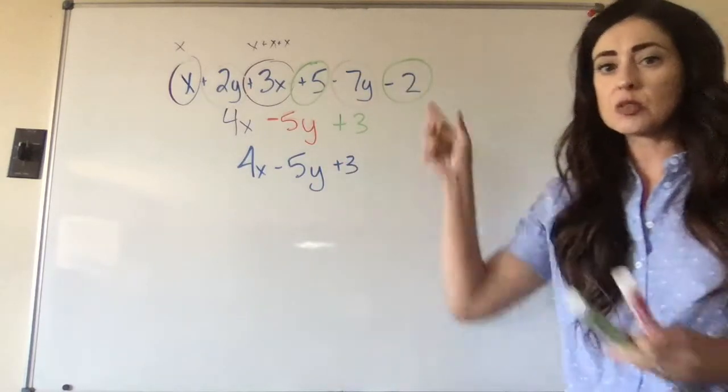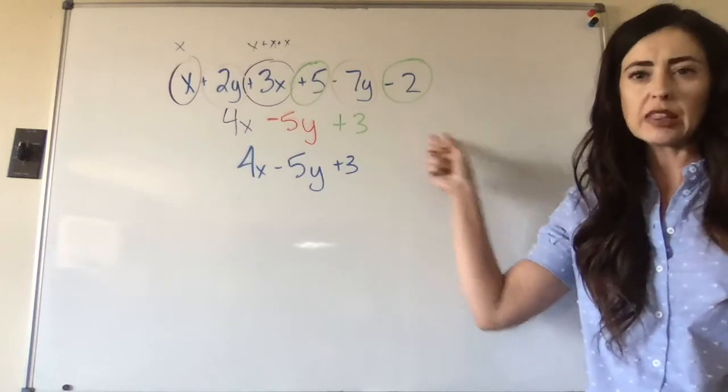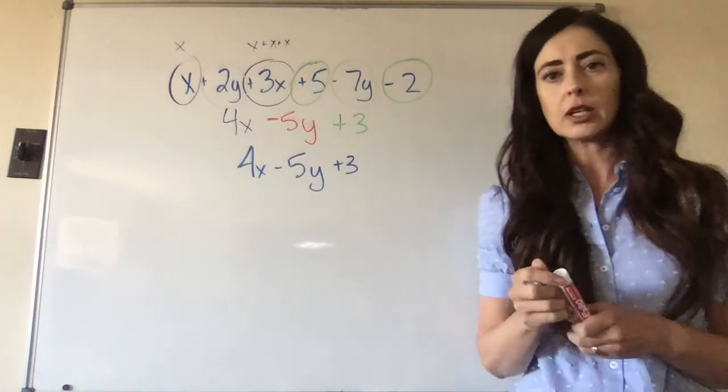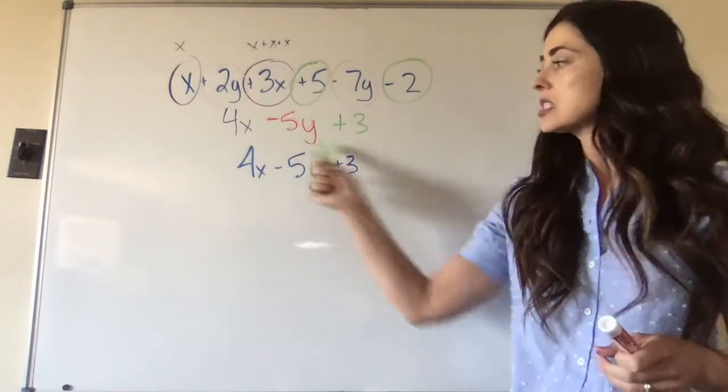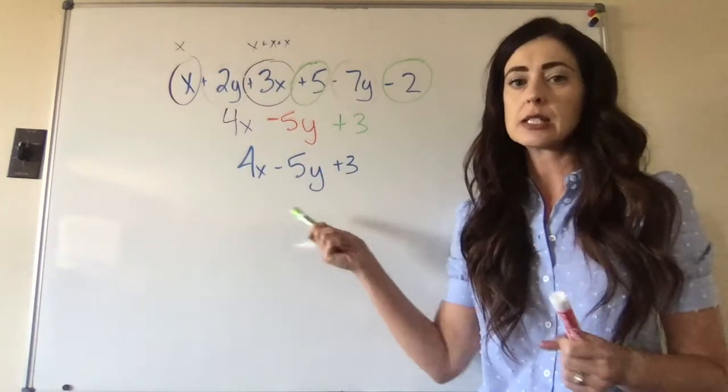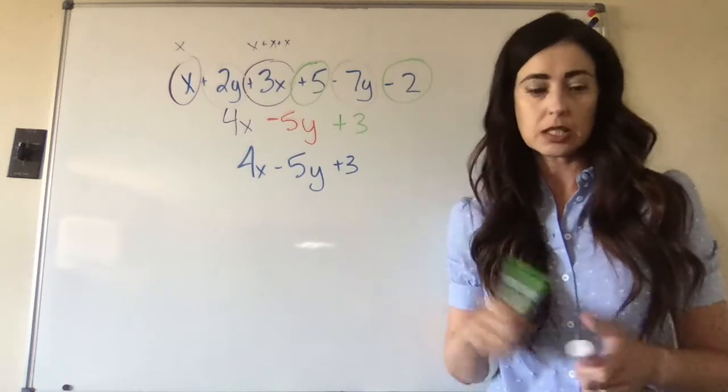So to simplify this first expression, it's listed in your book, they don't simplify it, but I thought it was a good example to simplify. So we would get 4x minus 5y plus 3. And then again, this one can't be simplified anymore because it doesn't have any other x's, y's, or constants to simplify it.